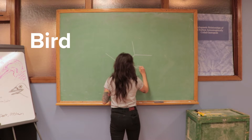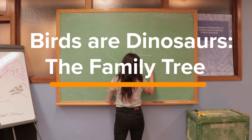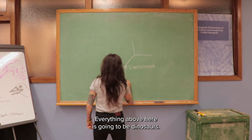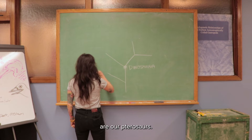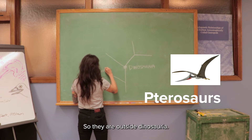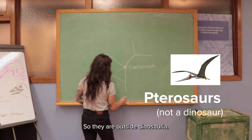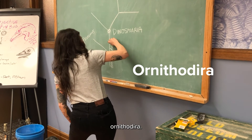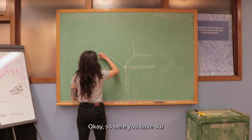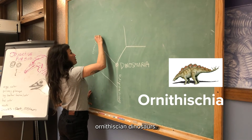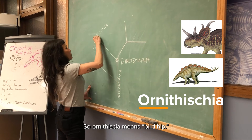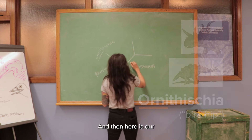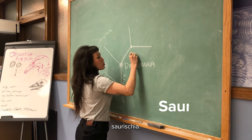Everything above here is going to be dinosaurs, and over here are our pterosaurs — they are outside Dinosauria. This group is called Ornithodira. Here you have our Ornithischian dinosaurs. Ornithischia means 'bird hip,' but ironically birds are not a member of this group.